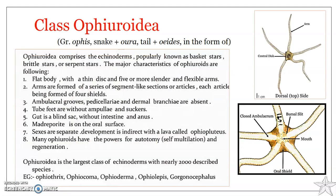The sexes are separate and development is indirect, with a larva. Specifically, the larval form is the ophiopluteus larva. Many ophiuroids have the powers of autotomy and regeneration.